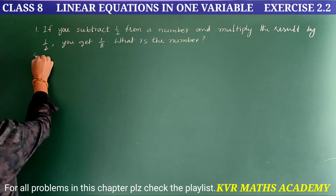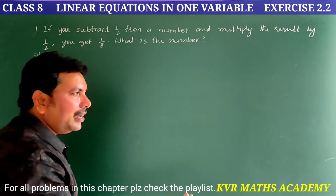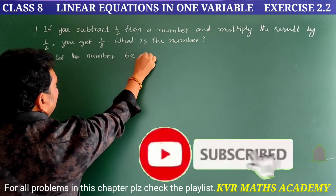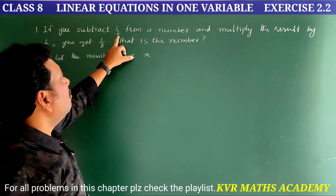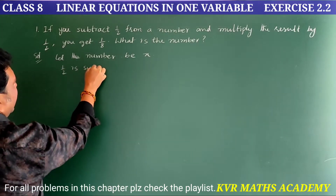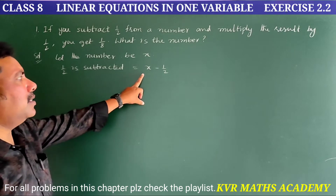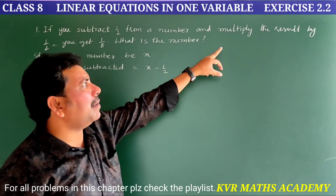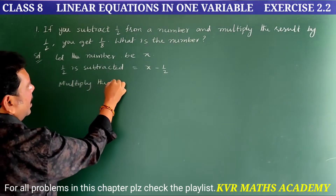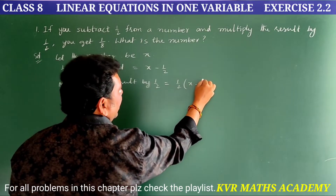Let us do the solution. What is given? If you subtract 1/2 from your number — so the number we have to find. Let the number be x. What is given? 1/2 is subtracted from the number, that is equal to x minus 1/2.